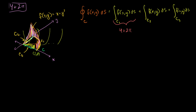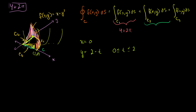Let's do C2 next. To do it, we need another parametrization of x and y — different from what we did for the arc. We're no longer along the circle; we're just along the y-axis. So x is definitely going to be equal to 0. And then y starts at y = 2, so we can say y = 2 − t, for t between 0 and 2. When t = 0 we're at the top point, and when t = 2 we're at the origin.